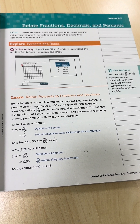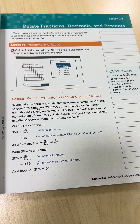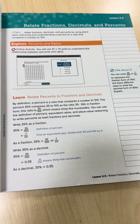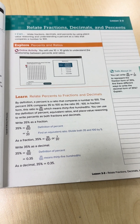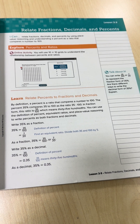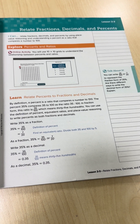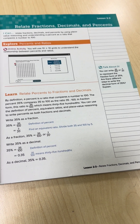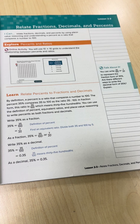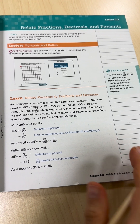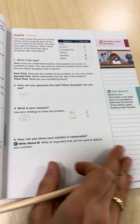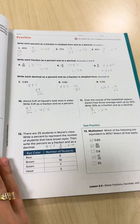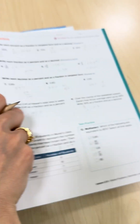We will continue now — listen to lesson three: relate fraction, decimal, and percent. Here we will convert between the three types of numbers: from fraction to decimal to percent and vice versa. I will go directly to the practice questions because it covered all the examples.